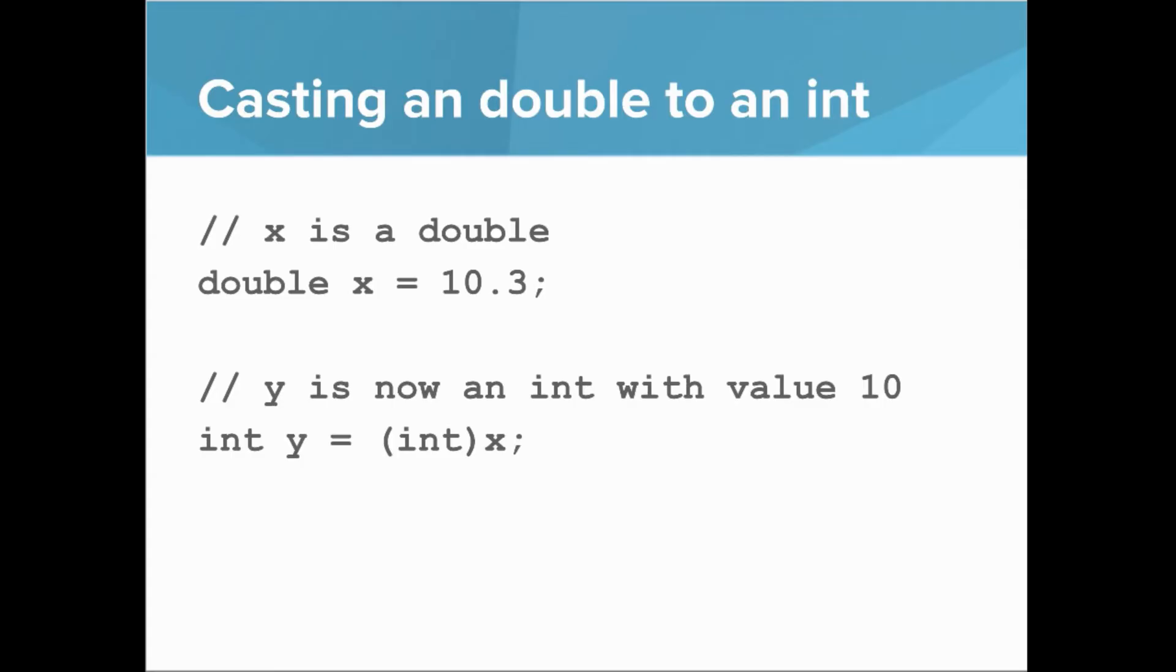If you want to cast a double to an int, so you have the double x is 10.3 and you want y to be an int, you put int in parentheses and now y has the value 10.